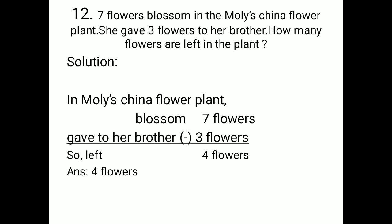7 flowers blossom in the China flower plant, and she gave her brother 3 flowers. As she gave flowers away, it will be subtraction — you cannot add this, you have to subtract 3 from 7. Write: in Molly's China flower plant, 7 flowers blossom; second line: gave to her brother 3 flowers. The result is 4 flowers.